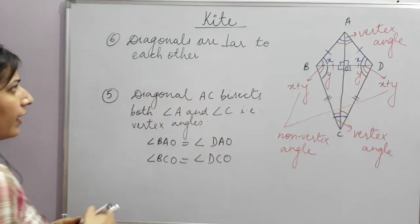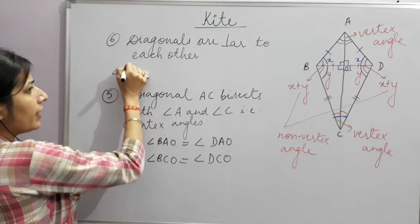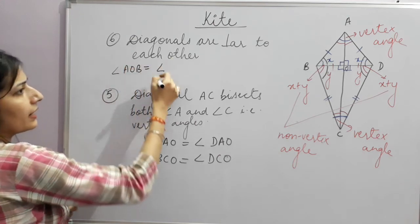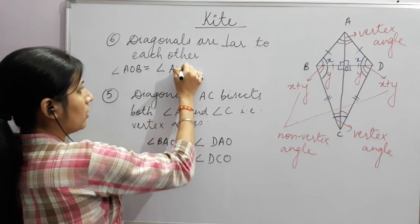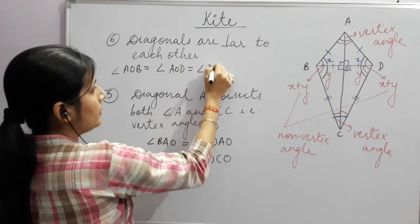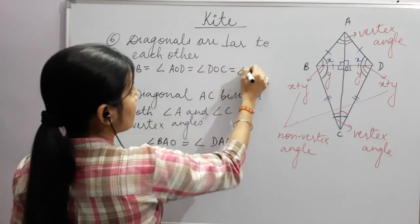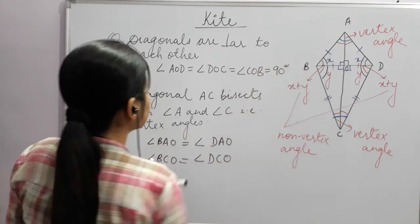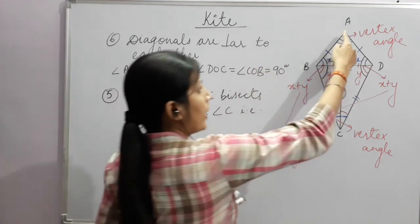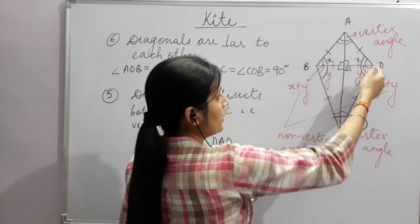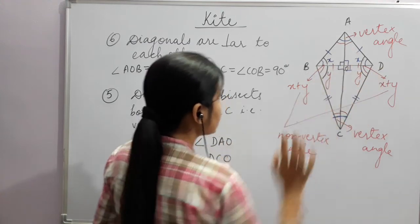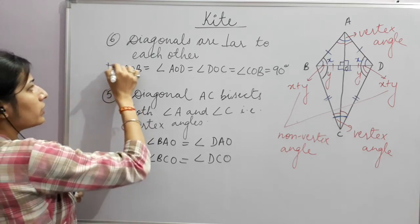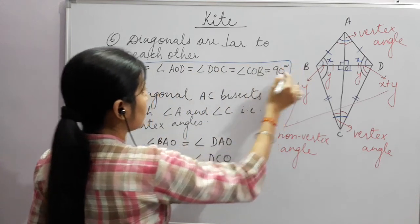So we write: angle AOB = angle AOD = angle DOC = angle COB = 90 degrees. The diagonals are perpendicular to each other.